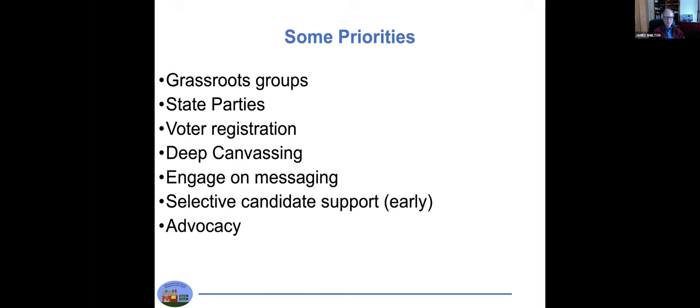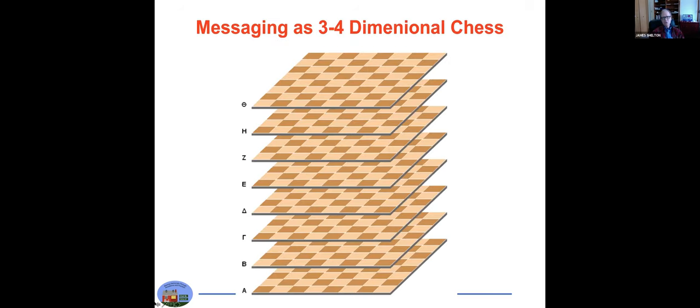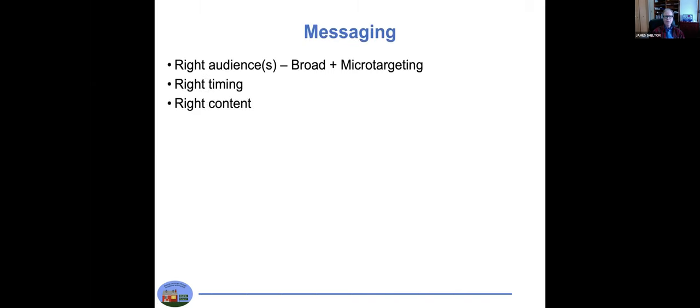Now switching to messaging. I like to think of it as a form of three-dimensional chess in a way. The Republicans have done a better job of subdividing the market, segmentation if you will. There's all these things: the right audience—you want to do some broad but also what I call micro-targeting—with the right timing in the election cycle, with the right content, the right tactical format, and the right media combinations to reach people.